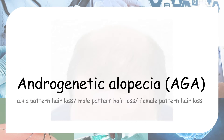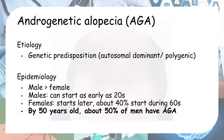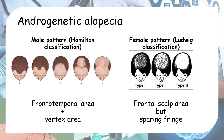Next we'll talk about androgenetic alopecia, also known as male pattern hair loss or female pattern hair loss. There is a genetic predisposition; it is more common in males and starts earlier in males. Here's the staggering statistic: by age 50, about 50% of all men have androgenetic alopecia. There is a difference between male pattern and female pattern hair loss, and each has its own classification.